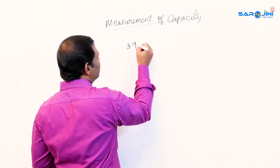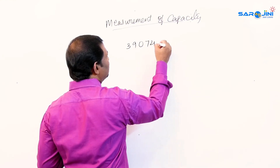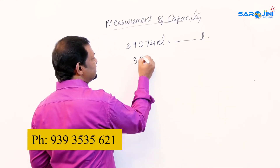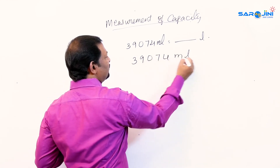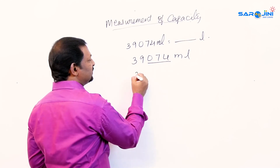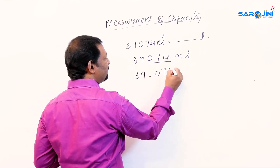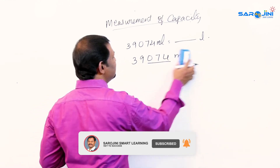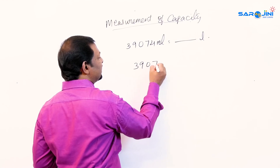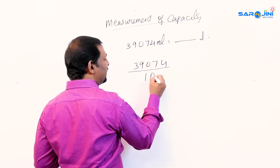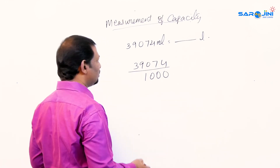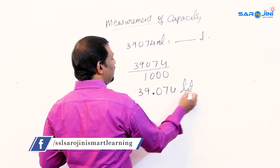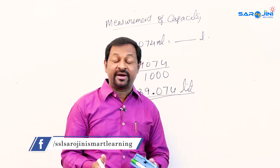Suppose 39,074 milliliters is given and you want to convert it into liters. Whenever ml comes, leave the last three places and put a decimal: that gives 39.074 liters directly. The alternate method is to divide 39,074 by 1000, which also gives 39.074 liters. So converting milliliters to liters means dividing by 1000, and converting liters to milliliters means multiplying by 1000.